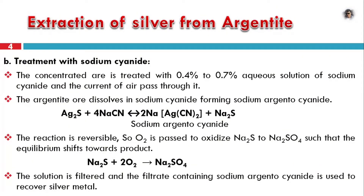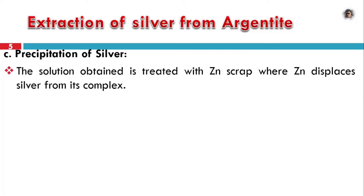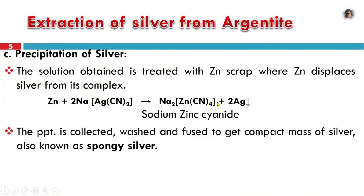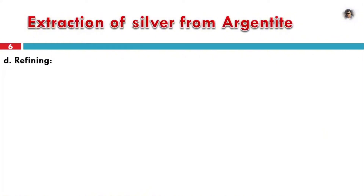We need to filter this complex solution. This is the precipitation of silver step. In the complex solution, we add zinc scrap. Zinc is more reactive and electropositive, so zinc displaces silver, forming sodium zinc cyanide complex and a silver precipitate. This precipitate (PPT) is collected, washed, and fused to get a compact mass — sponge silver.